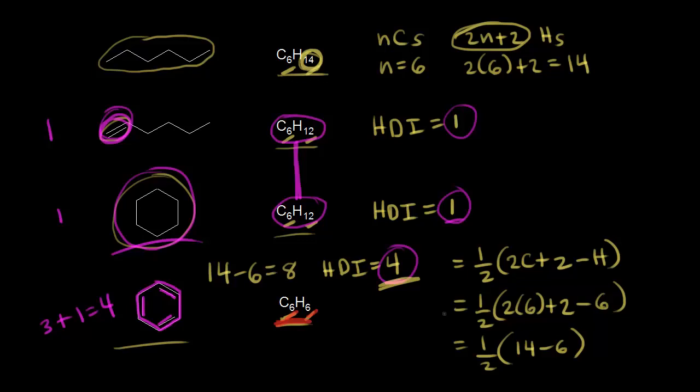If you have a spectroscopy problem and you calculate an HDI equal to four, think about the possibility of a benzene ring being present in the structure of your molecule.